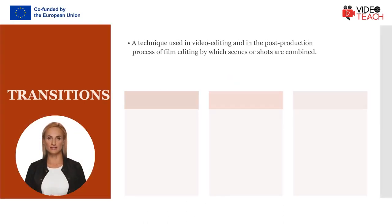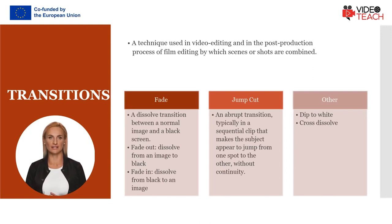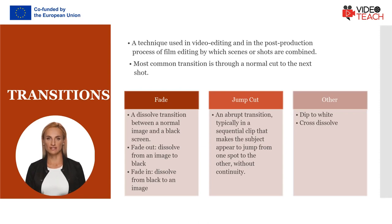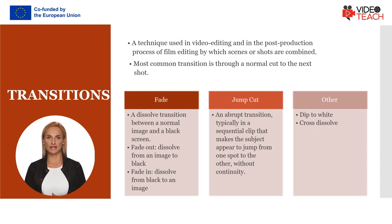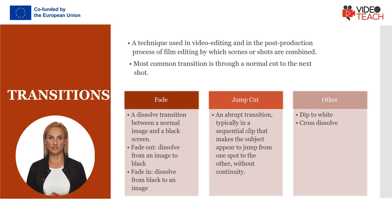Transition is a technique used in video editing and in the post-production process of film editing, during which scenes or shots are combined. The most common transition is a normal cut to the next shot. Some other basic transitions are: Fade — a dissolve transition between a normal image and a black screen; when you dissolve from an image to black it's a fade out, and from black to an image it's a fade in. Jump cut — an abrupt transition, typically in a sequential clip, that makes the subject appear to jump from one spot to another without continuity. Other transitions include dipped to white and cross dissolve.